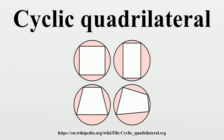The cyclic quadrilateral has maximal area among all quadrilaterals having the same sequence of side lengths. This is another corollary to Bretschneider's formula. It can also be proved using calculus. Four unequal lengths, each less than the sum of the other three, give the sides of each of three non-congruent cyclic quadrilaterals, which by Brahmagupta's formula all have the same area.